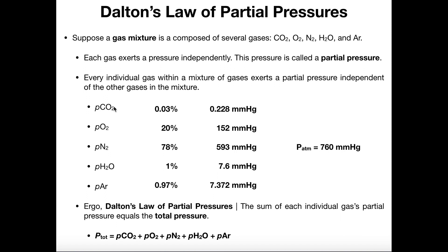We have a very small amount of carbon dioxide — only about three hundredths of a percent — so it's going to have a very small partial pressure. According to Dalton's Law of Partial Pressures, the sum of each individual gas's partial pressure equals the total pressure. If I take all these partial pressure values from the percentages of the gases in the atmosphere and add them, I'll get something pretty much equal to 760 millimeters of mercury.